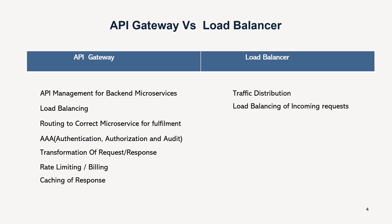API gateway also has the capability of caching responses. If a response can be served to the customer multiple times without going back to the microservices to produce it again, it can be cached at the API gateway level. This saves several hops when calling microservices and speeds up the performance of the application.